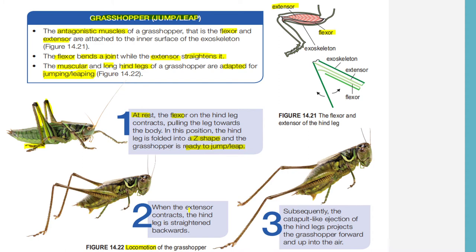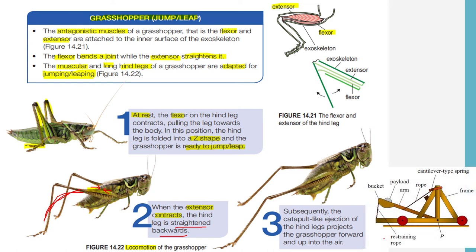When the extensor contracts, it gets shorter, and the pulling action will straighten the hind legs backwards. Subsequently, you get to see this position — it's like a catapult ejection jump, where the hind legs project the grasshopper forward and up into the air. That's the mechanism of locomotion in grasshoppers.